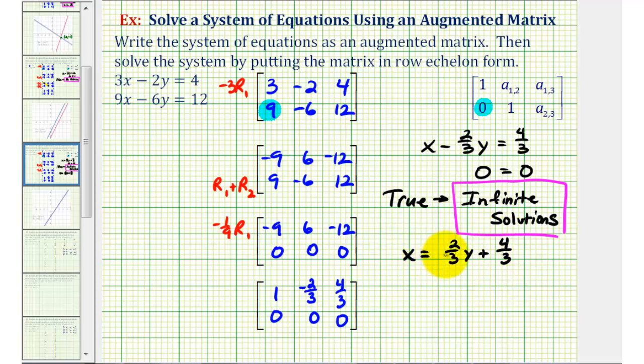This equation is telling us that we can select any value for y, and then calculate the value of x that would satisfy this system of equations. Often when we have an infinite number of solutions, we express the solution parametrically, and we introduce a new variable, so we have an equation both for x and y.